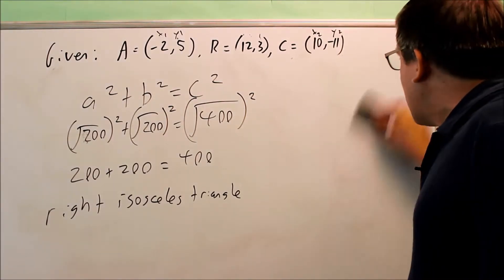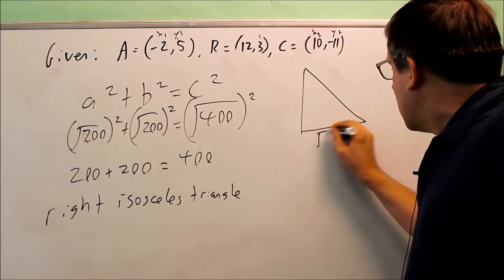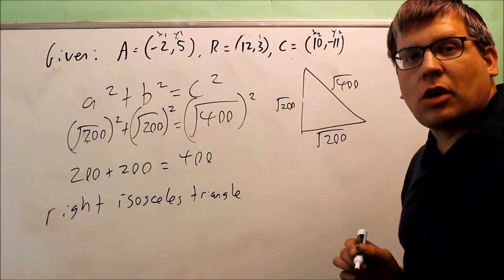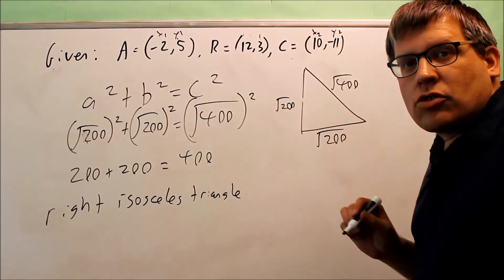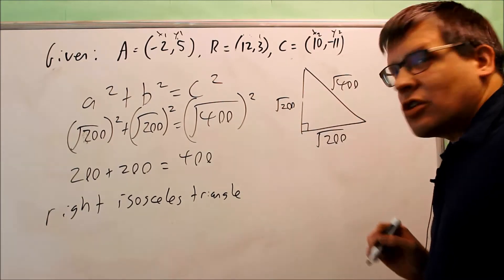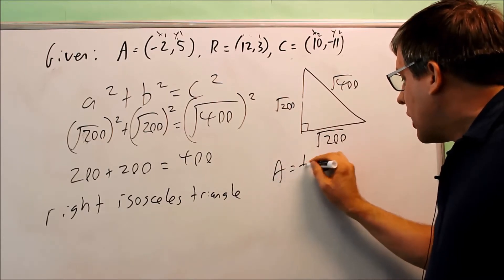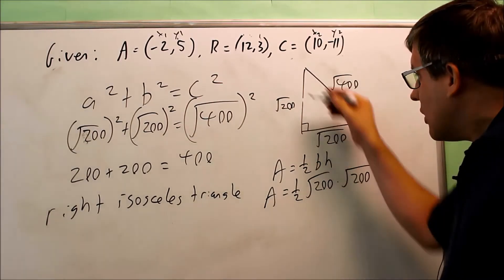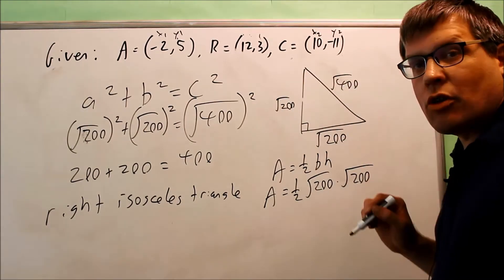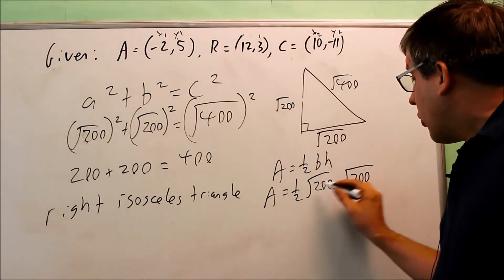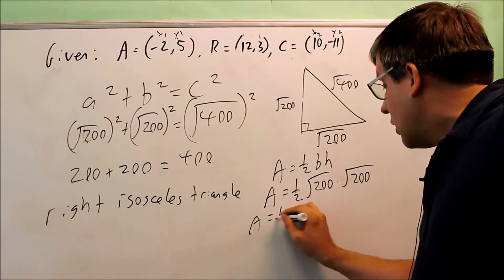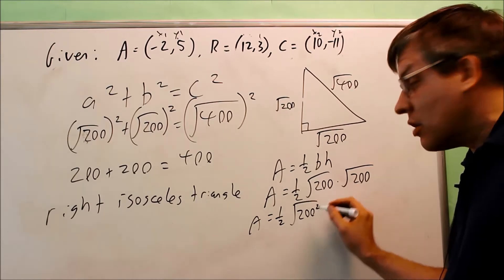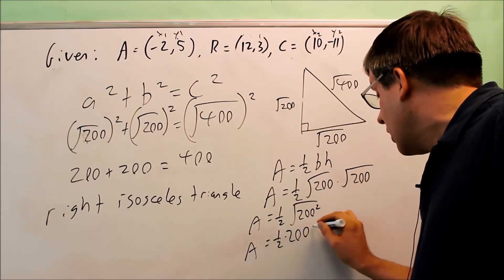Next, I need to find the area of this triangle. The three sides are square root of 200, square root of 200, and square root of 400. The formula for area of a triangle is one-half base times height, and the base and height must be at a right angle to each other — which is the 90-degree angle here. So I use square root of 200 for both base and height. Multiplying the two radicals gives square root of 200 squared, the radical disappears, and I get one-half times 200, which equals 100.